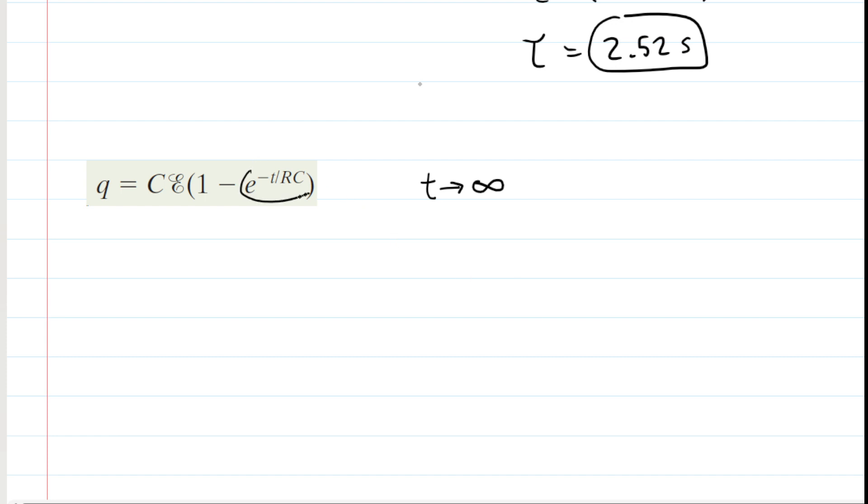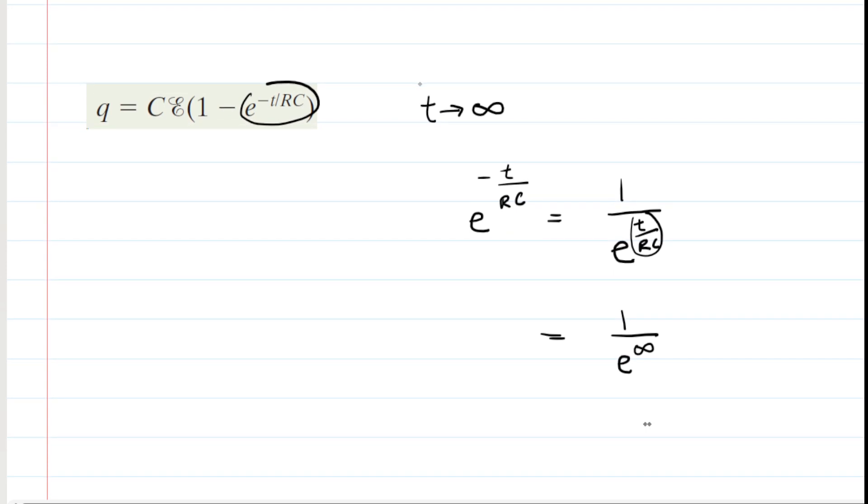If we look at this exponential term right here, we have e raised to the negative t over RC. From our knowledge of mathematics, anything with a negative exponent can actually be rewritten in terms of a positive exponent by reciprocating it. So we could rewrite that exponential term as follows. Now as time approaches infinity, then this little fraction, t over RC, if we let t go to infinity, that little fraction goes to infinity. So now we have 1 over e to the power of infinity. Now e is a number that's approximately equal to 3, so if you multiply 3 by itself an infinite number of times, you're going to get infinity. So we have 1 divided by infinity, which of course approaches 0.